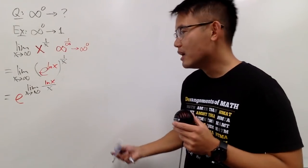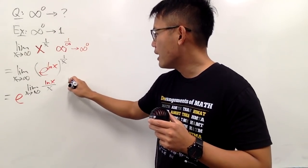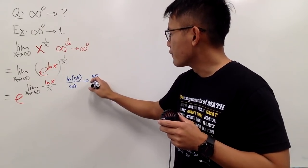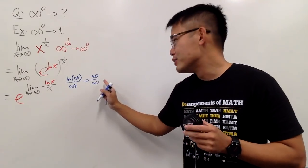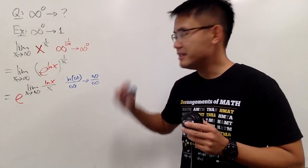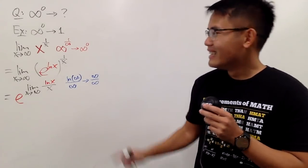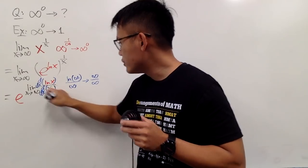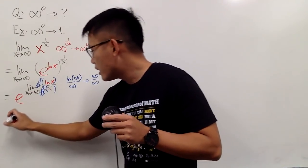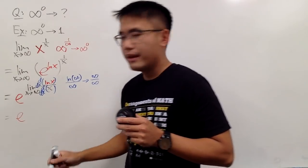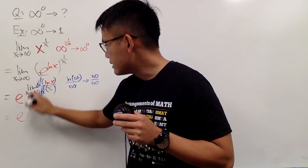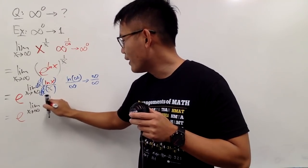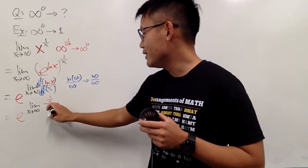If you plug infinity in, you get ln infinity over infinity. Since ln of infinity is infinity, this is the indeterminate form infinity over infinity. We prefer this form because we can use L'Hôpital's rule. Differentiating the top and bottom: the derivative of ln x is 1 over x, and the derivative of x is 1, so we get the limit as x approaches infinity of (1 over x) over 1.